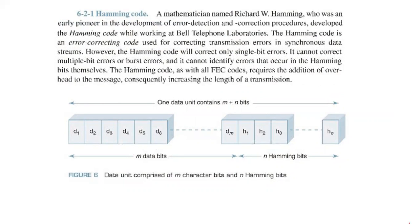Mathematician Richard Hamming developed Hamming code in early research on error detection and correction procedures. The Hamming code is an error correcting code used for correcting transmission errors in synchronous data streams. However, the Hamming code will correct only single-bit errors. It cannot correct multiple-bit errors or burst errors, and it cannot identify errors that occur in the Hamming bits themselves.